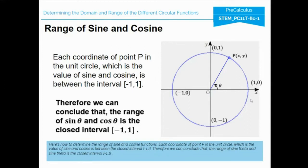For the range of sine and cosine: each coordinate of point P in the unit circle — which is the value of sine and cosine — is between the interval negative 1 and 1. Therefore, we can conclude that the range of sine theta and cosine theta is the closed interval from negative 1 to 1. Any values between negative 1 and 1, where both endpoints are included, can be in the range of sine and cosine.